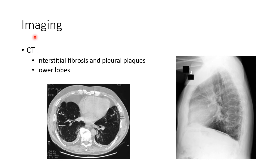Now let us see about the imaging in asbestosis. CT reveals interstitial fibrosis and pleural plaques, especially found in the lower lobes. As you can see in this picture, there are pleural plaques. This X-ray shows interstitial fibrosis in asbestosis and pleural plaques.